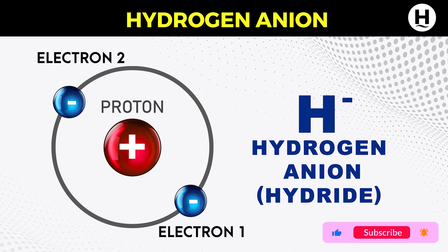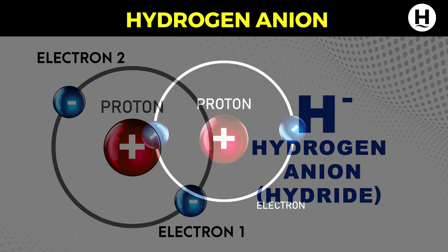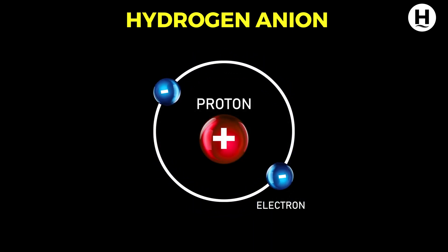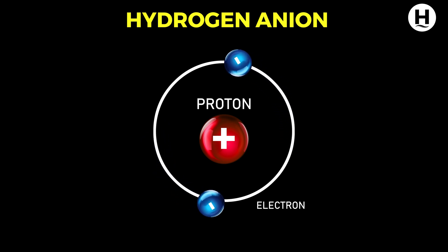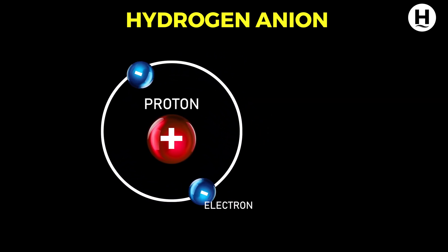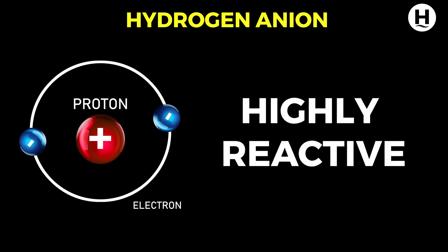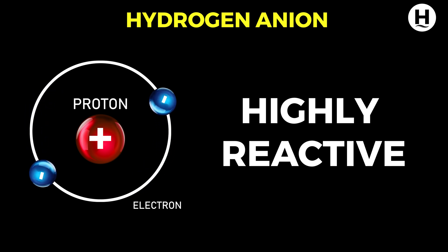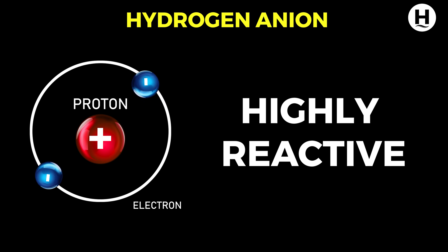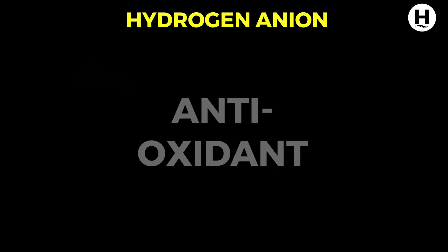The hydride has a negative charge and is written as H−. Its orbital representation shows a single proton in the center and two electrons surrounding it. Due to its extra electron, this form of hydrogen is highly reactive.